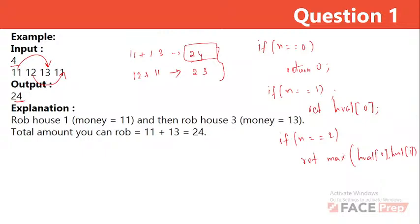For more than two houses, I'll create a DP array of size n to store the maximum amount at each house. I'll initialize the first two elements based on the base cases. Then I'll use dynamic programming to fill the rest of the array starting from the third house onward.